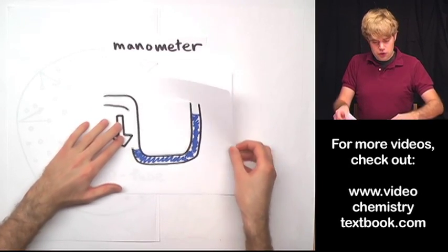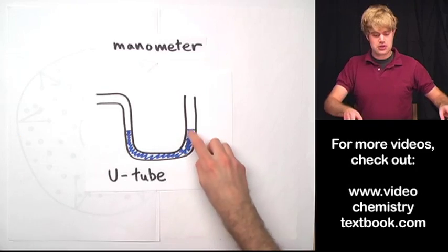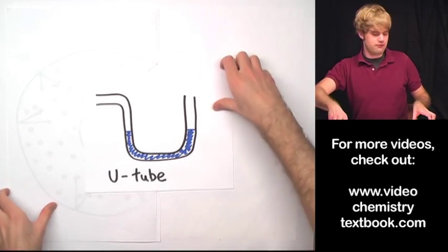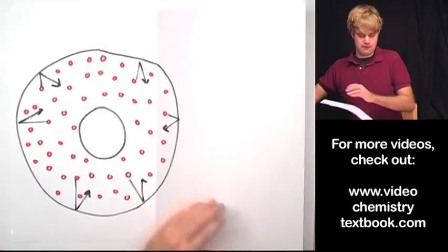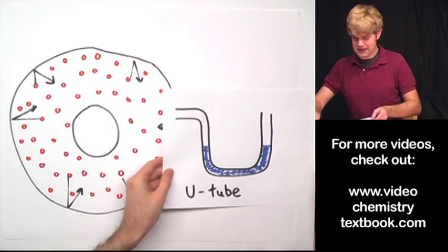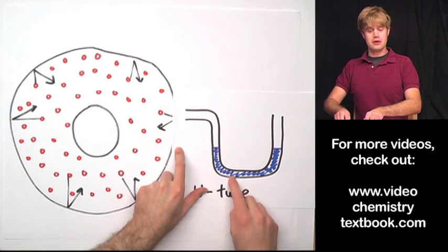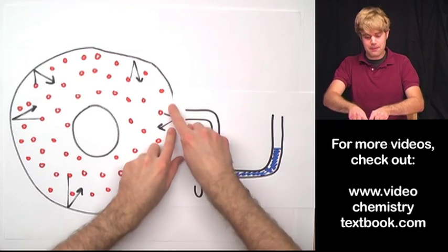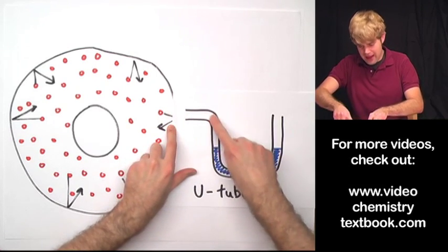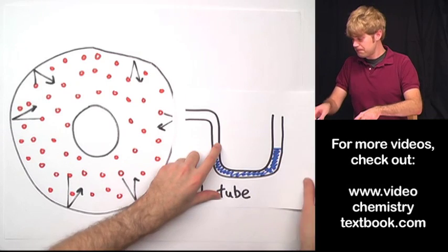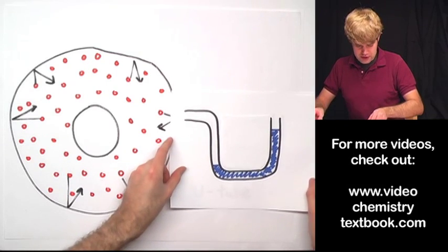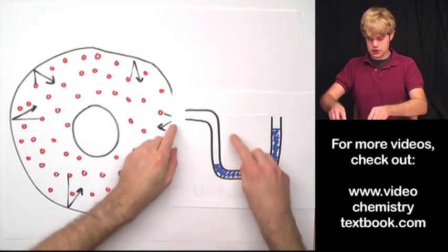So, I can use a U-tube like this to measure the pressure of something, say, in like my tire. And what I do is I take my tire and I connect my U-tube to it and I open up the tire so that then the air could press in here. And what would end up happening, just as with what happens when I press into it, is that the air from the tire...